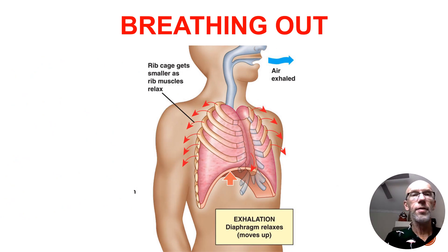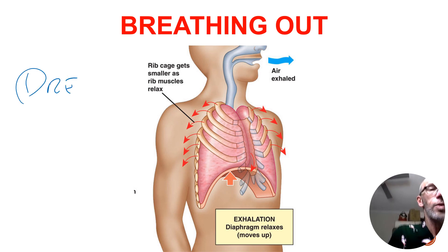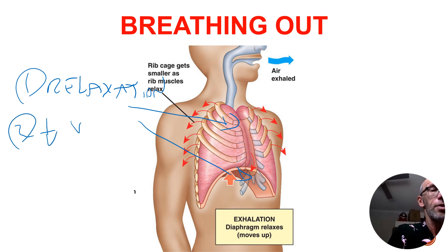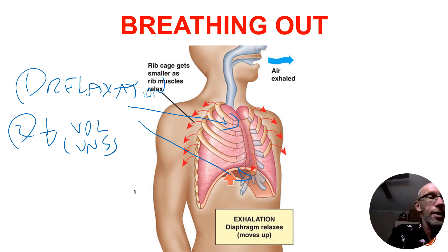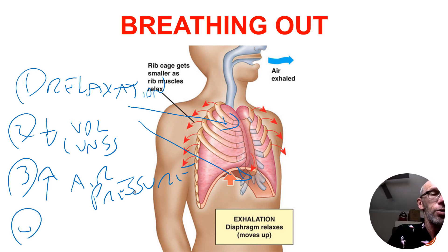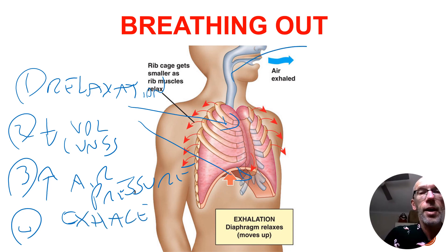As you might have guessed, the opposite is occurring when we exhale. Step one, we get a relaxation of those key muscles involved in the breathing process — the diaphragm and the intercostal muscles. That causes a decrease in the volume of the lungs, and because we've got more air in a tighter area, that actually increases the air pressure in the lungs. And we need to release some of that pressure, so that's what causes the exhaling of that air out of the lungs.